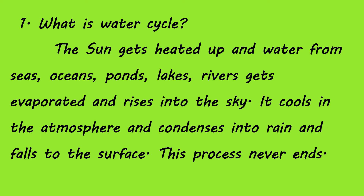What is water cycle? The sun gets heated up and water from seas, oceans, ponds, lakes, rivers gets evaporated and rises into the sky. It cools in the atmosphere and condenses into rain and falls to the surface. This process never ends. This is called the water cycle.